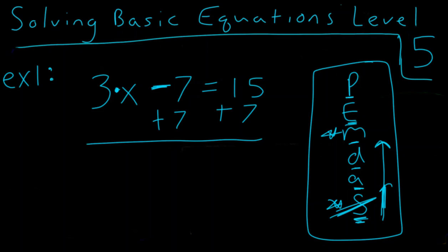And remember, when I have a negative and a positive of the same number, and I'm combining them, I've just created a zero pair. And so we have 3x is equal to 15 plus 7, which is, of course, 22.